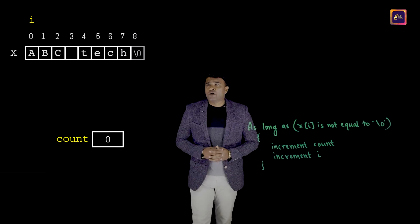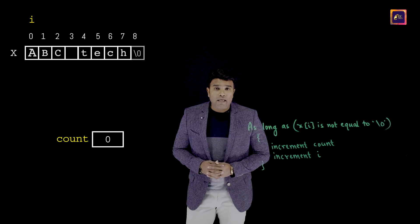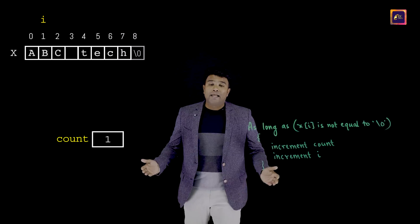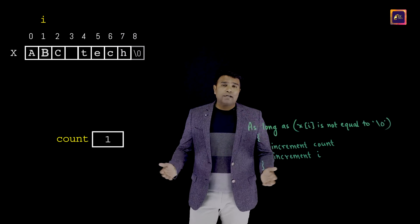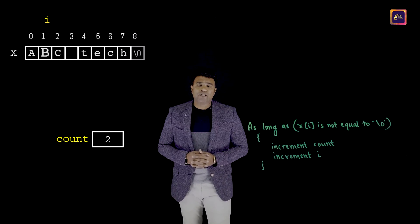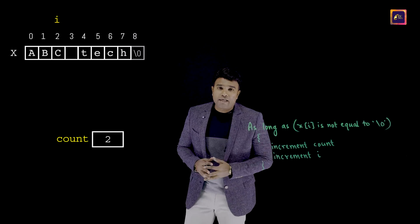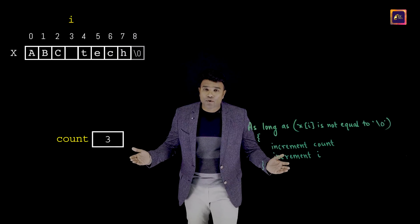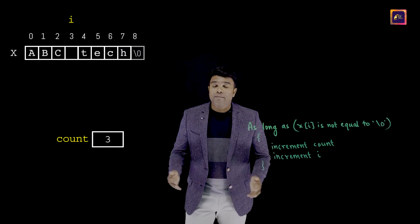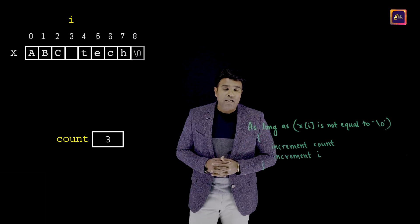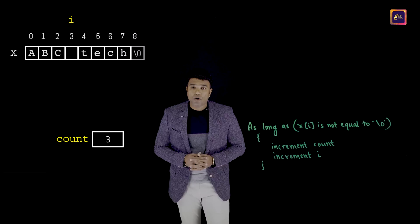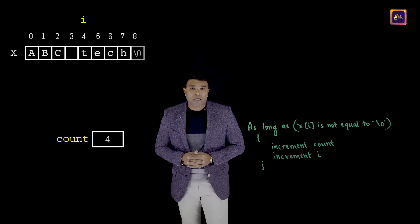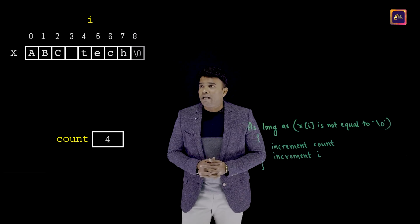Let's apply this logic on the array. The first time, x[i] is 'a' — not equal to null, so increment count and i. Next, x[i] is 'b' — not null, increment both. Then 'c' — same. Next, x[i] is a blank space. Note that blank and null are different — null is still further ahead in the array. So because blank is not equal to null, I increment count and i again.